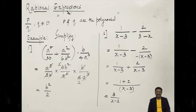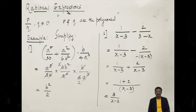Dear learners, this session is on rational expressions. What is rational form in mathematics? p by q, where q is not equal to 0 — we have already seen this in previous lessons. In this discussion, we are going to discuss p and q as polynomials. So p by q, q not equal to 0, and p and q are polynomials. I am planning to discuss six examples on how to simplify the rational expression form.